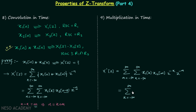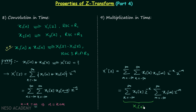After the substitution, we can separate the expression into a summation from k equals minus infinity to infinity of x1(k) times z to the power minus k, multiplied by a summation from m equals minus infinity to infinity of x2(m) times z to the power minus m. If you look closely, the first summation is the Z-transform of x1(n), which is X1(z), and the second summation is the Z-transform of x2(n), which is X2(z).